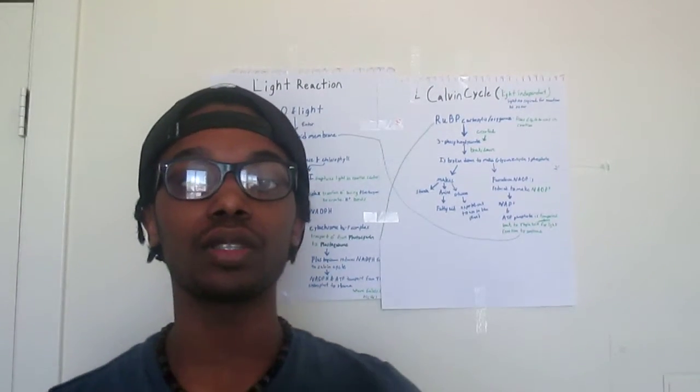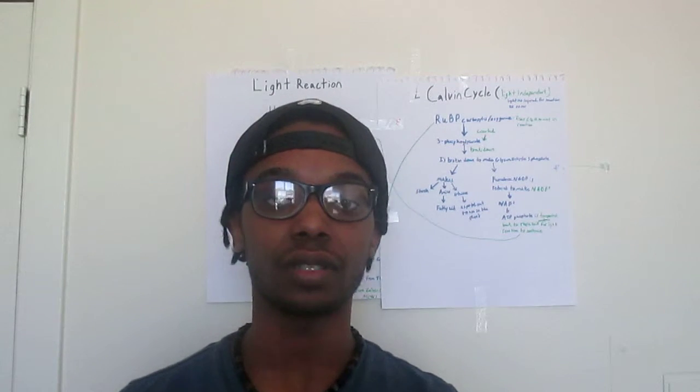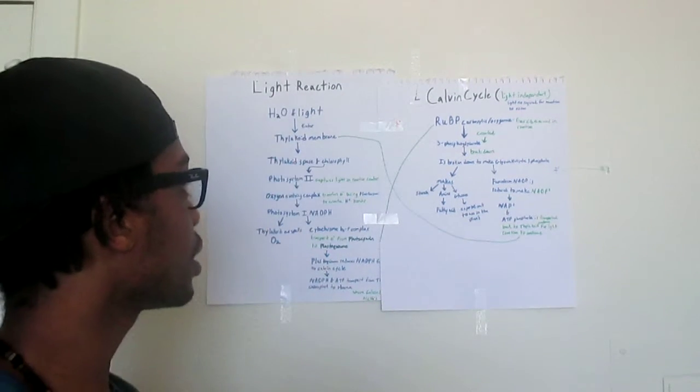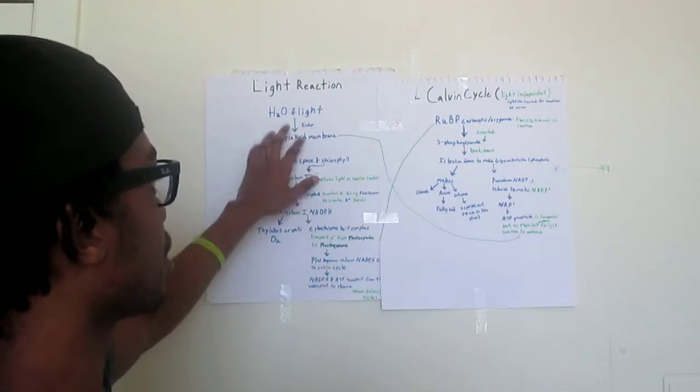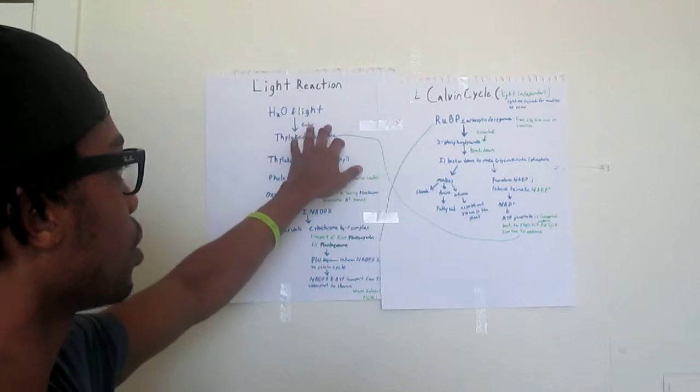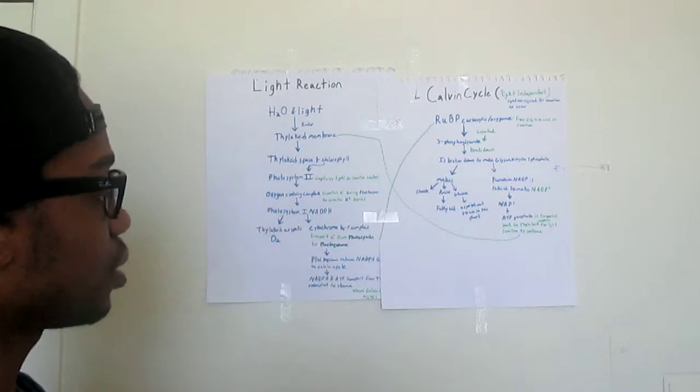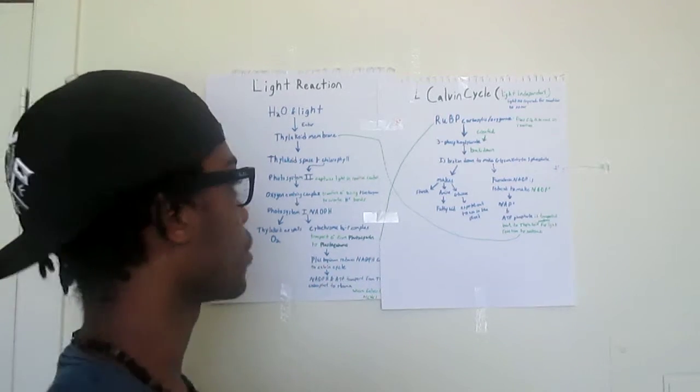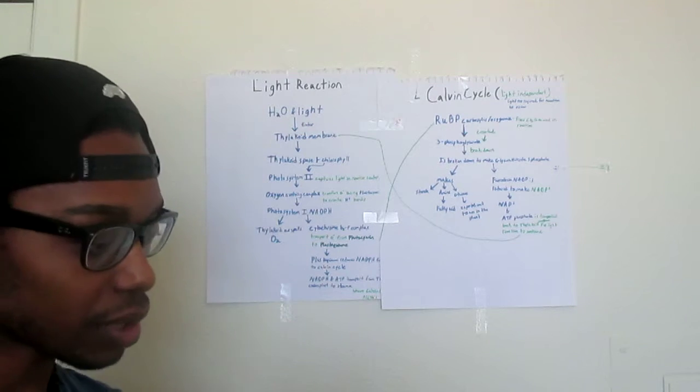My name is Anthony Williams and today we're going to talk about the light reaction and the Calvin cycle. Within the light reaction, that is basically photosynthesis, and that is H2O and light which enters the thylakoid membrane. That thylakoid membrane goes into the thylakoid space in the chlorophyll.